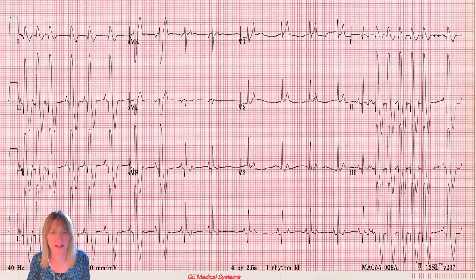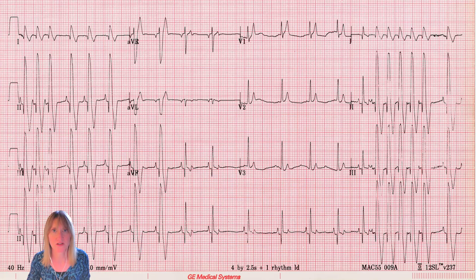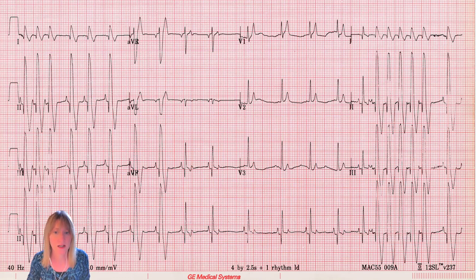We have nine leads in the top three lines and a lead two rhythm strip along the bottom. If you watched the last episode, what you'll recall is we have sort of two separate morphologies here — the section in the middle represents normal conducting sinus rhythm, and the sections on either end we concluded represented a left bundle branch block. Still a supraventricular rhythm, but with a conduction abnormality called left bundle branch block, explaining the wide and bizarre QRS complexes.